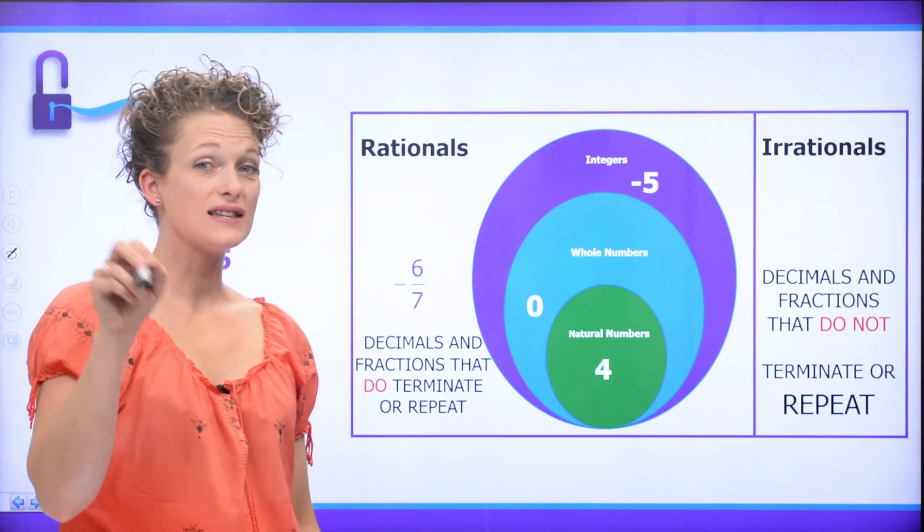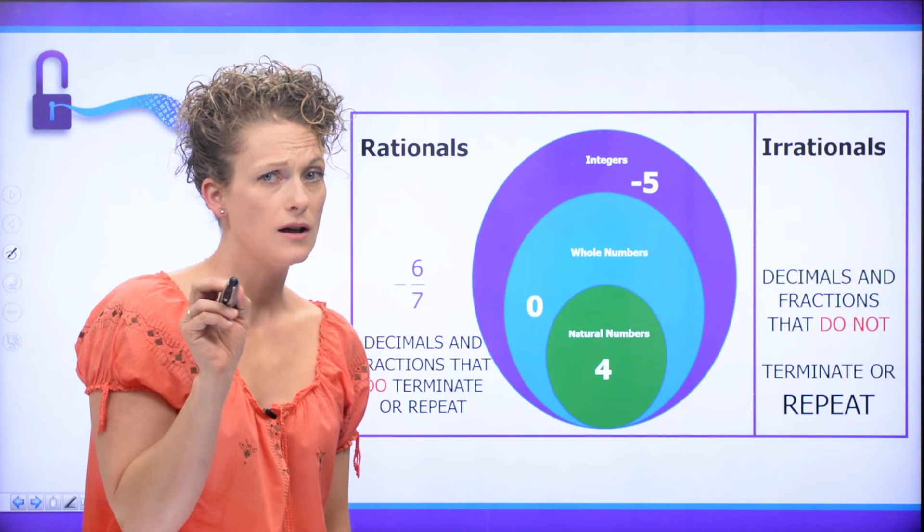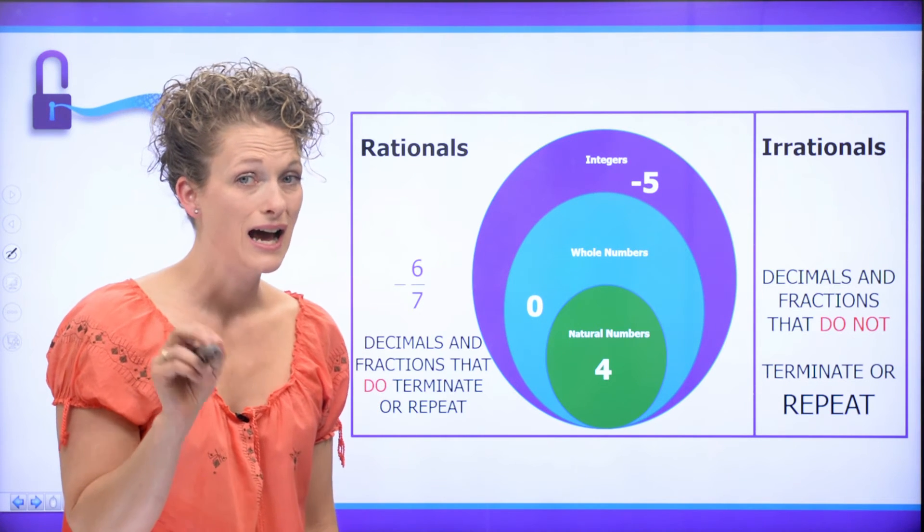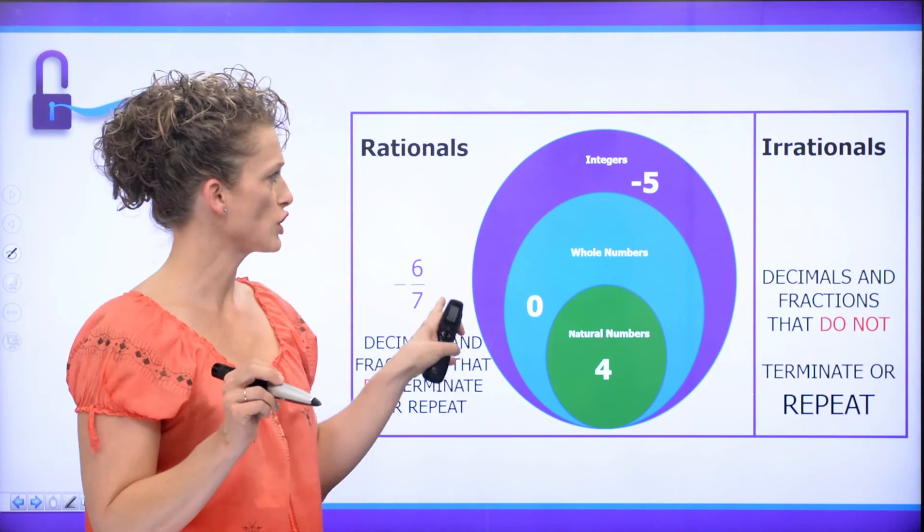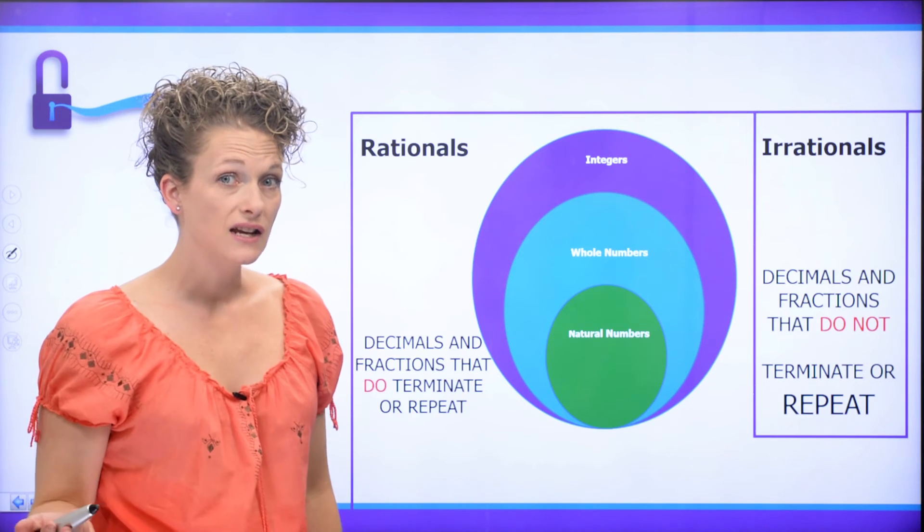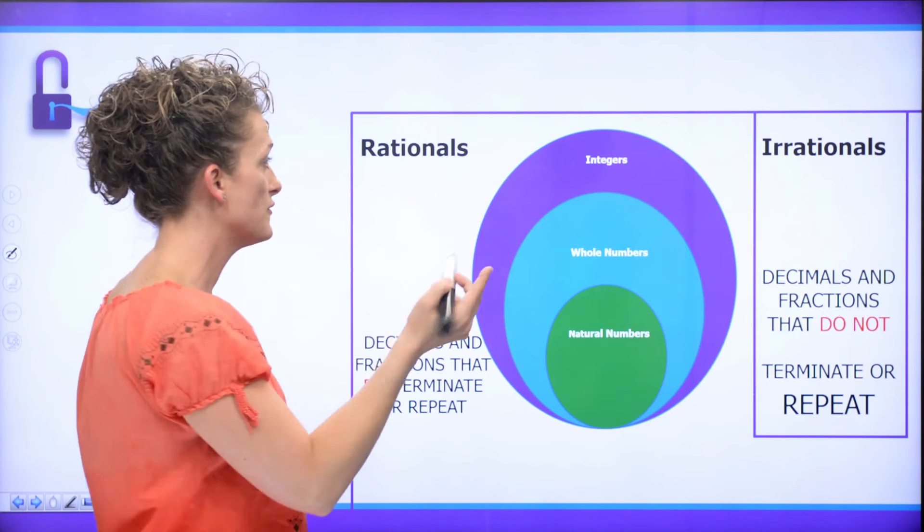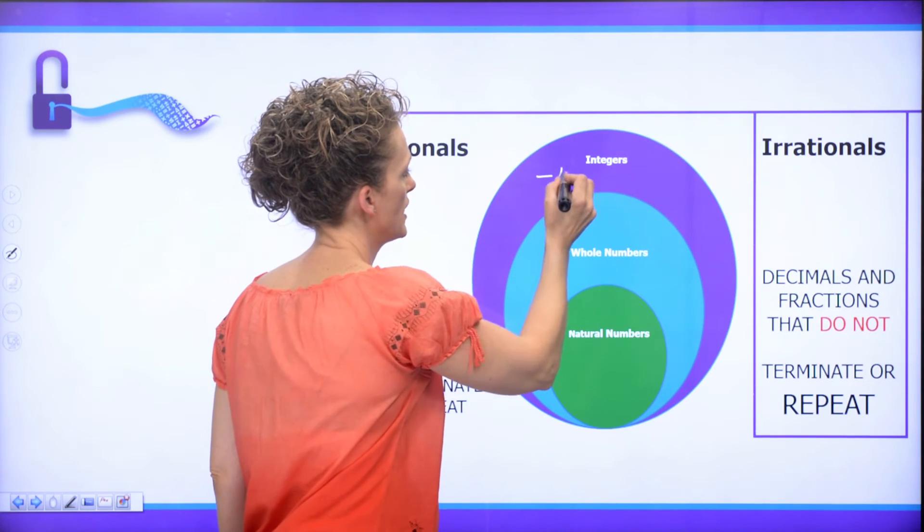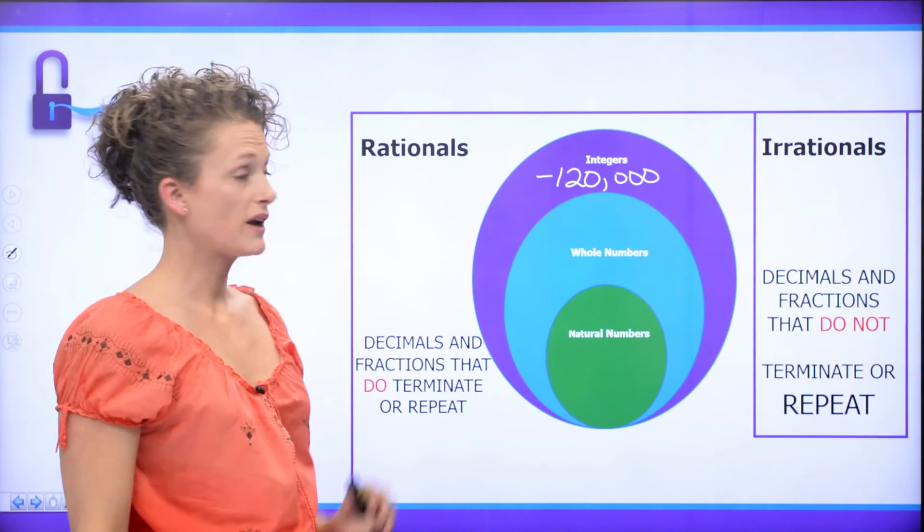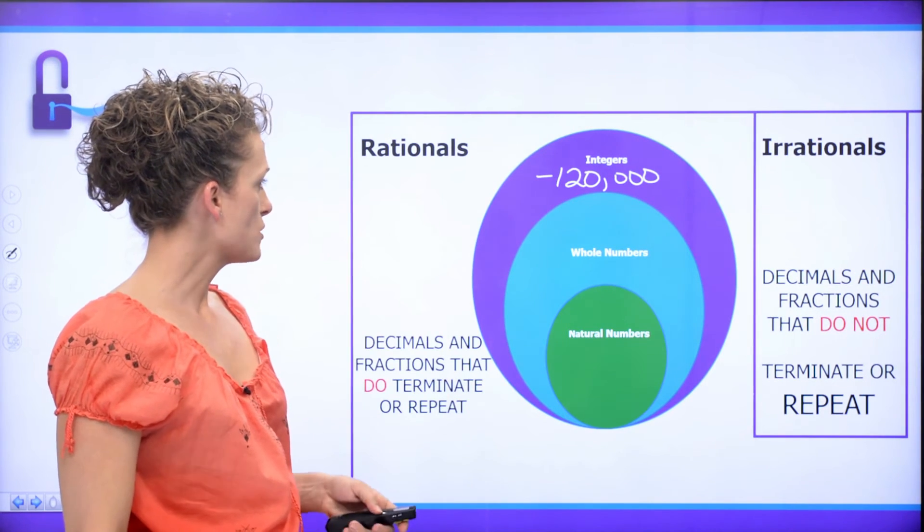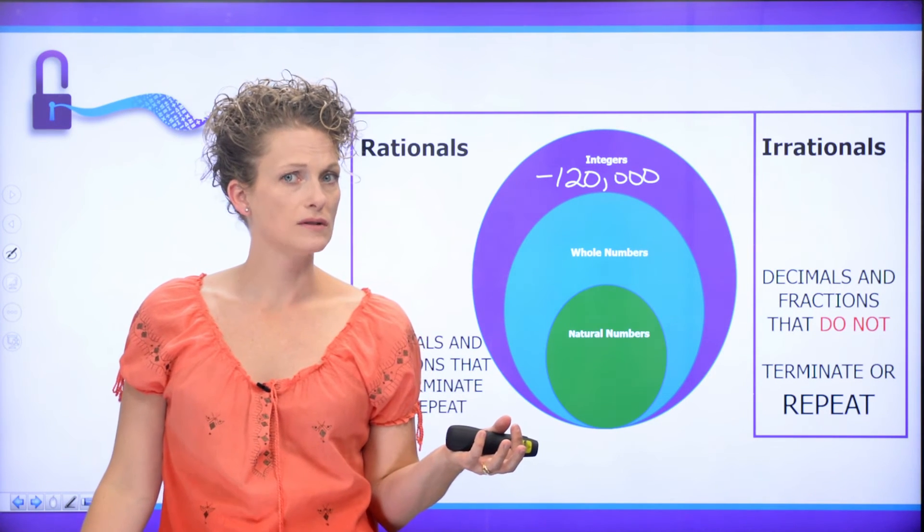So now let's just, in summary, let's talk about those numbers we started with. Do you remember me being the bank calling and saying that I was in debt $120,000? Where would that go in our rational chart? Well, it's a negative number. It doesn't matter the size, how big or how small. If it's negative, it's an integer. So negative $120,000 would live in this area right here.